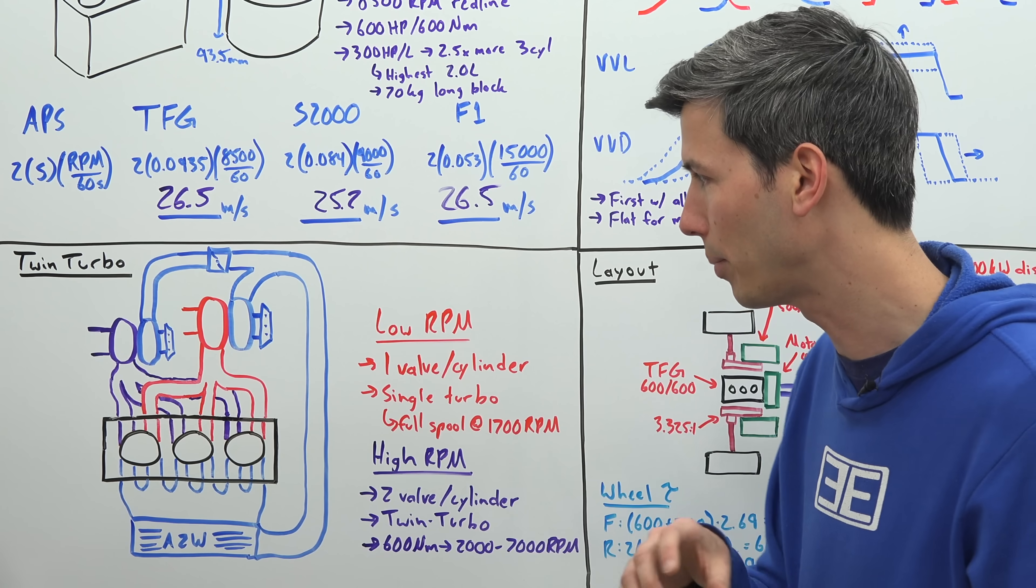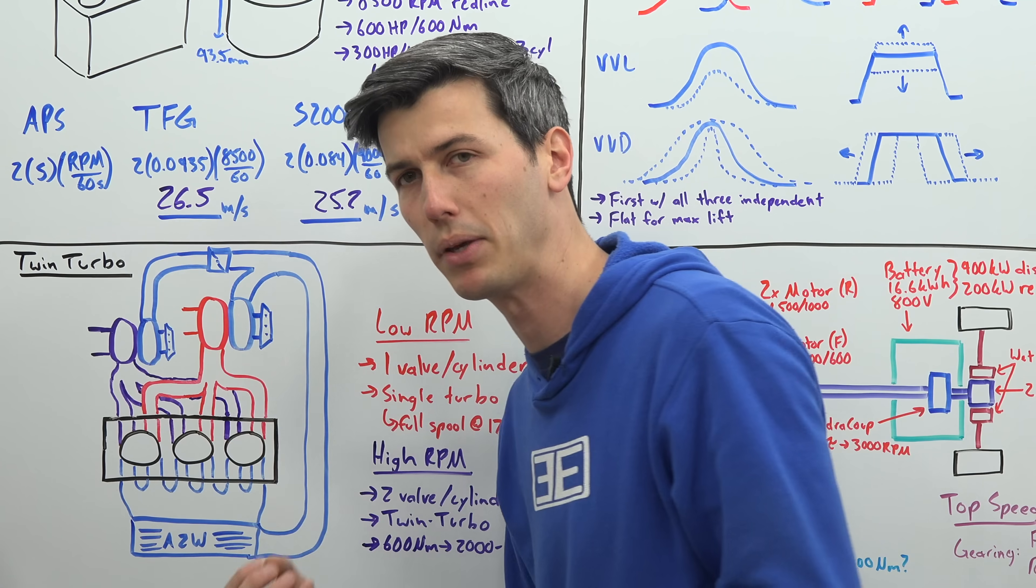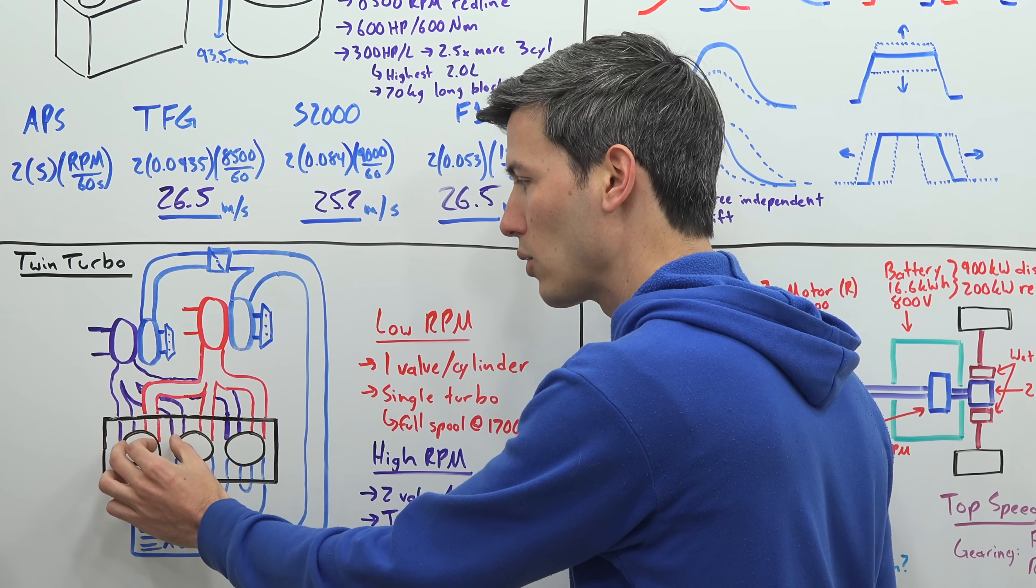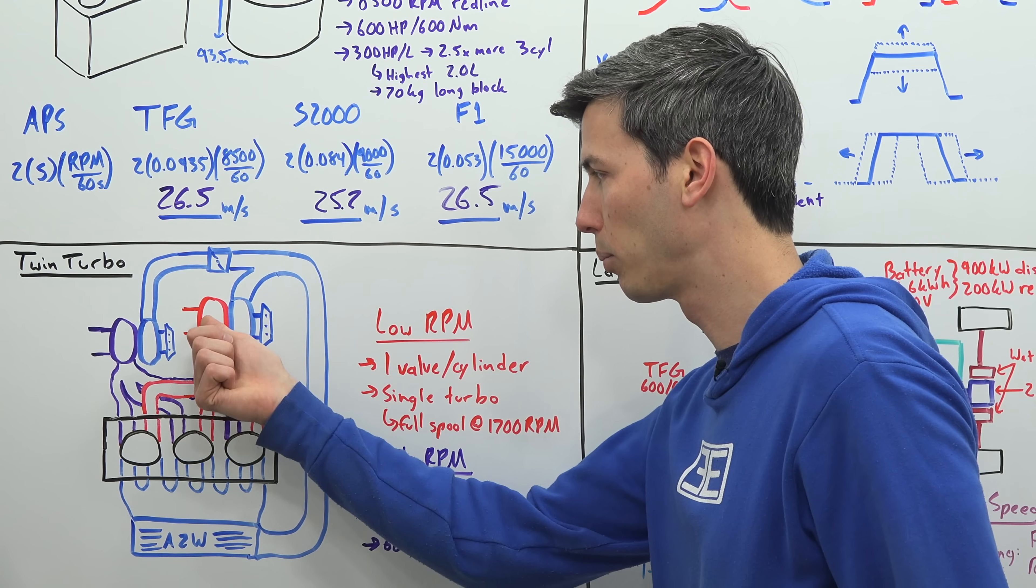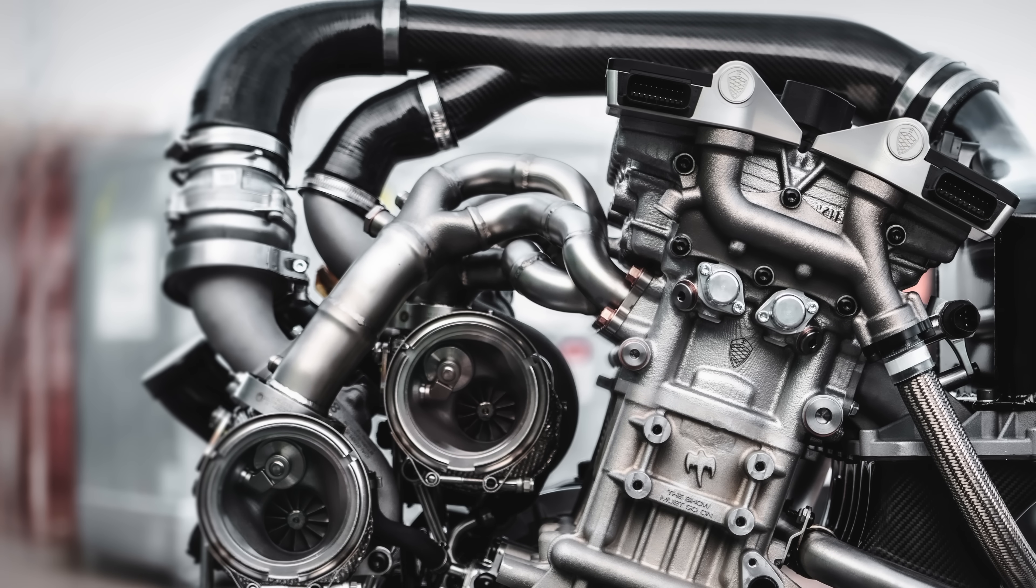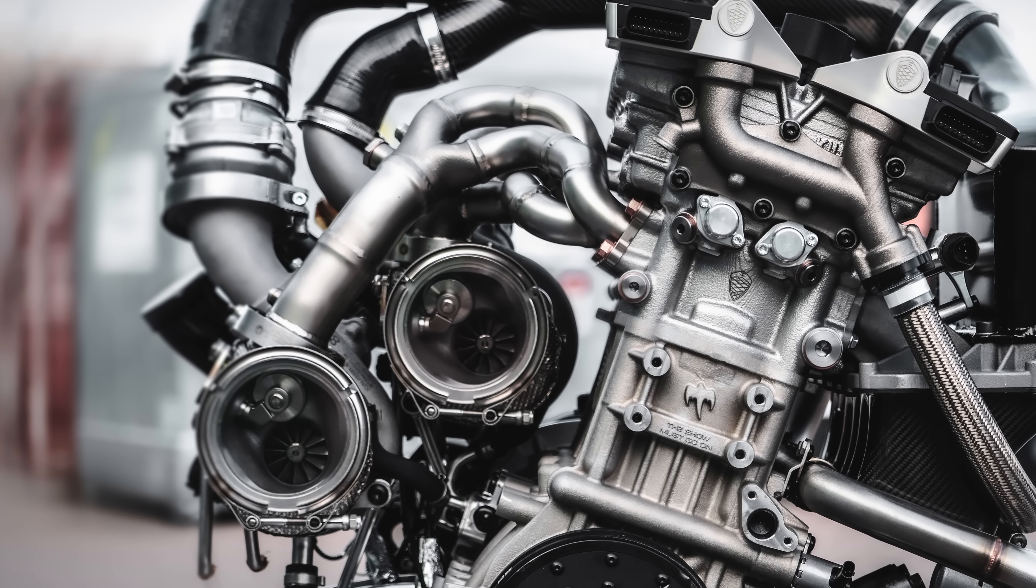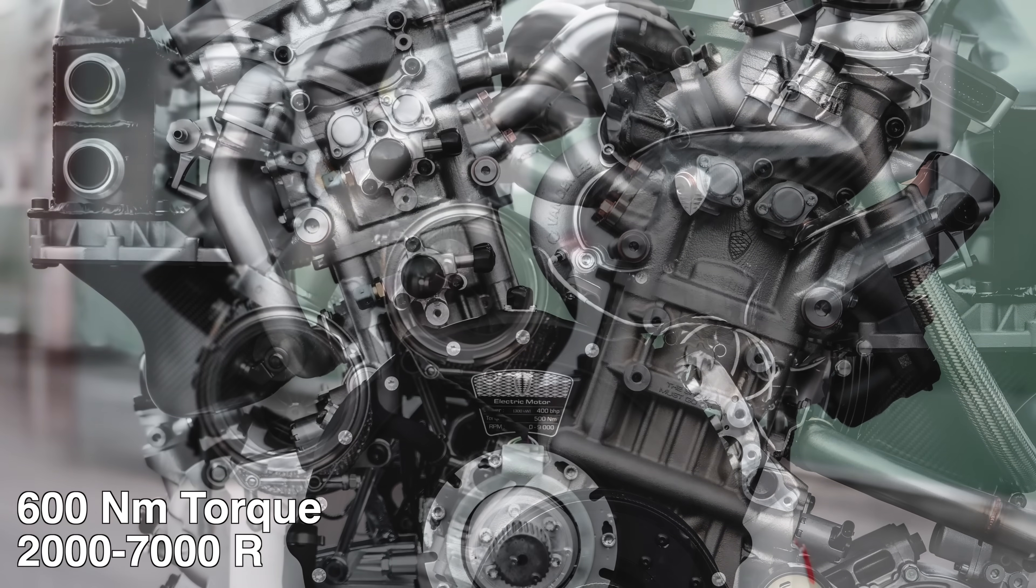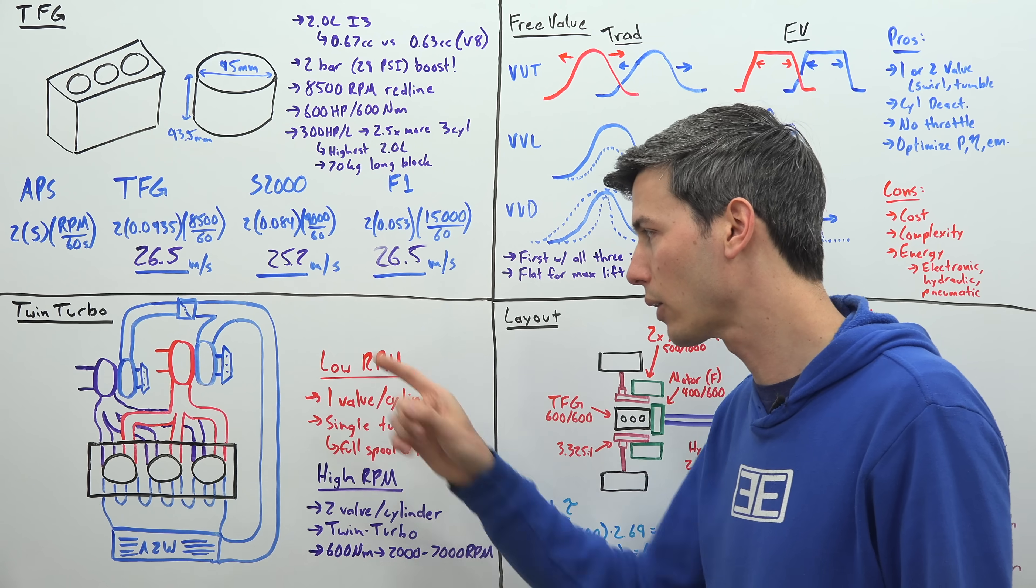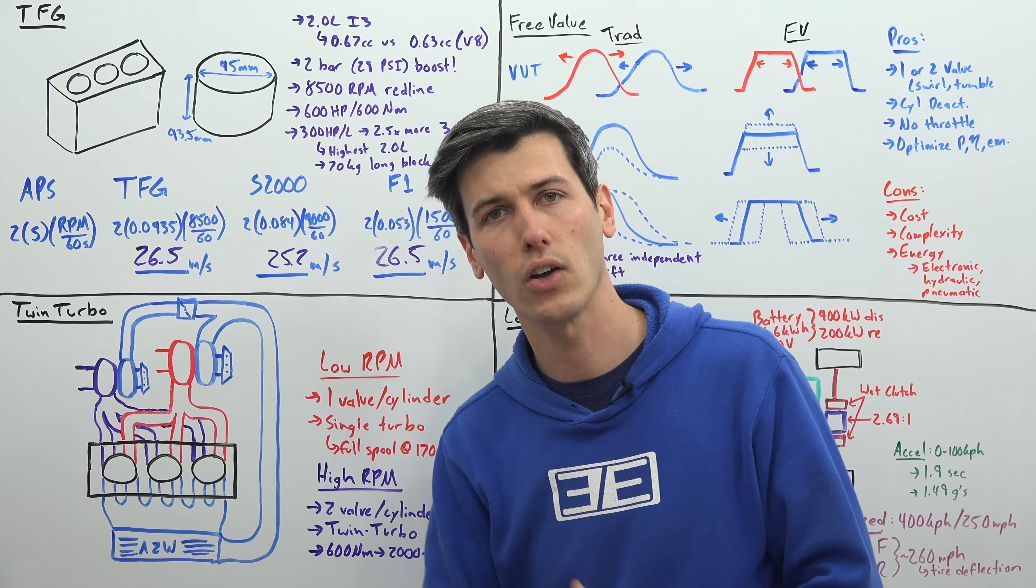Then as you start to increase RPM, you open up both exhaust valves, and you spool up both turbochargers, and you make peak power. So at low RPM, when it's just using the single turbocharger, by closing off that exhaust valve, it's able to spool up peak spool at 1700 RPM. And then as you increase in RPM, and you have enough, plenty of exhaust gases to spool up both, it switches over, and you're able to produce 600 Nm of torque from 2000 RPM all the way up to 7000 RPM. Very cool strategy that they have here with the turbochargers, and using free valve to split the exhaust gases.